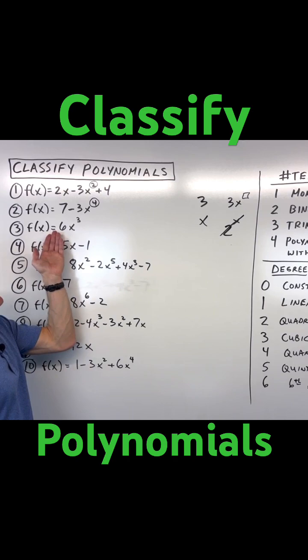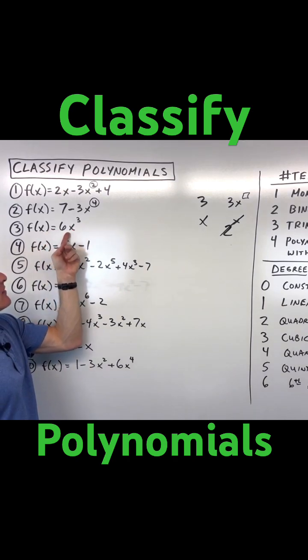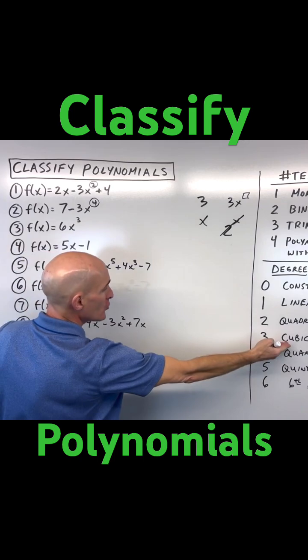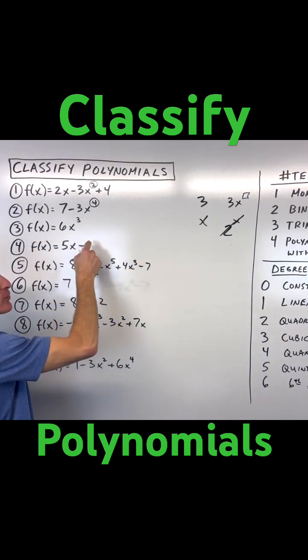Let's go to number three: f of x equals six x cubed. Again, this highest power is three, so we're thinking cubic. Only one term here, we're thinking monomial.